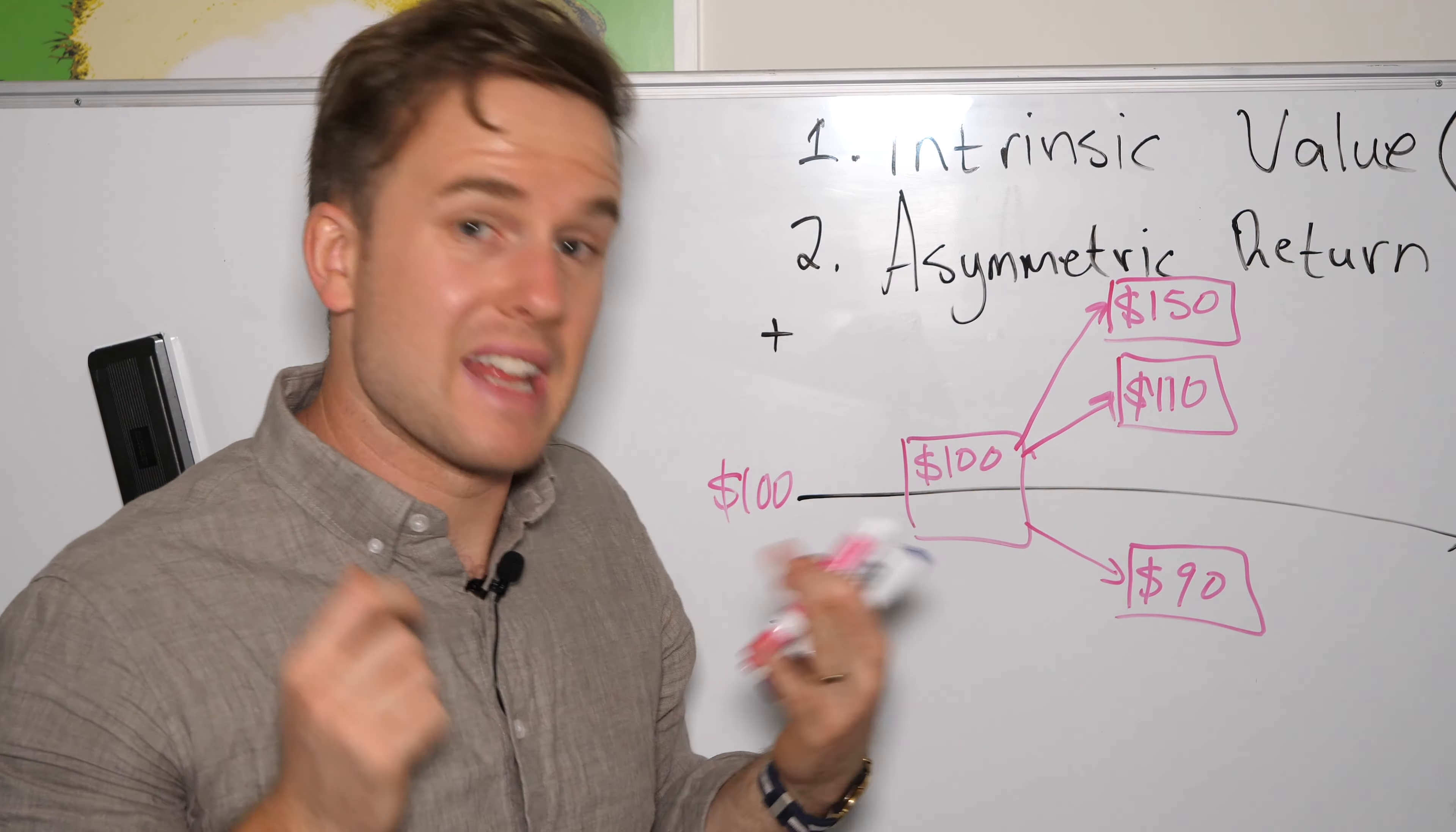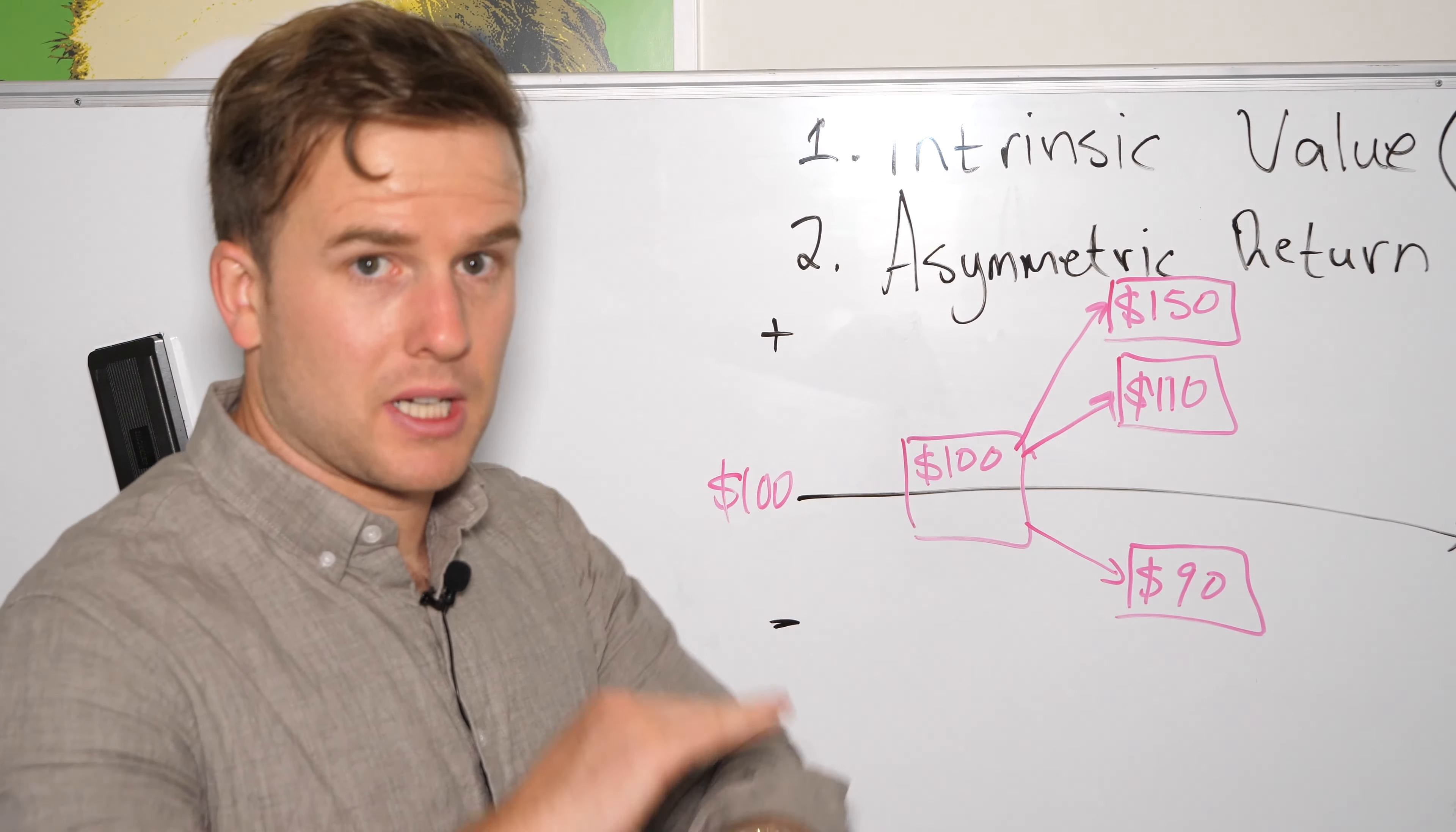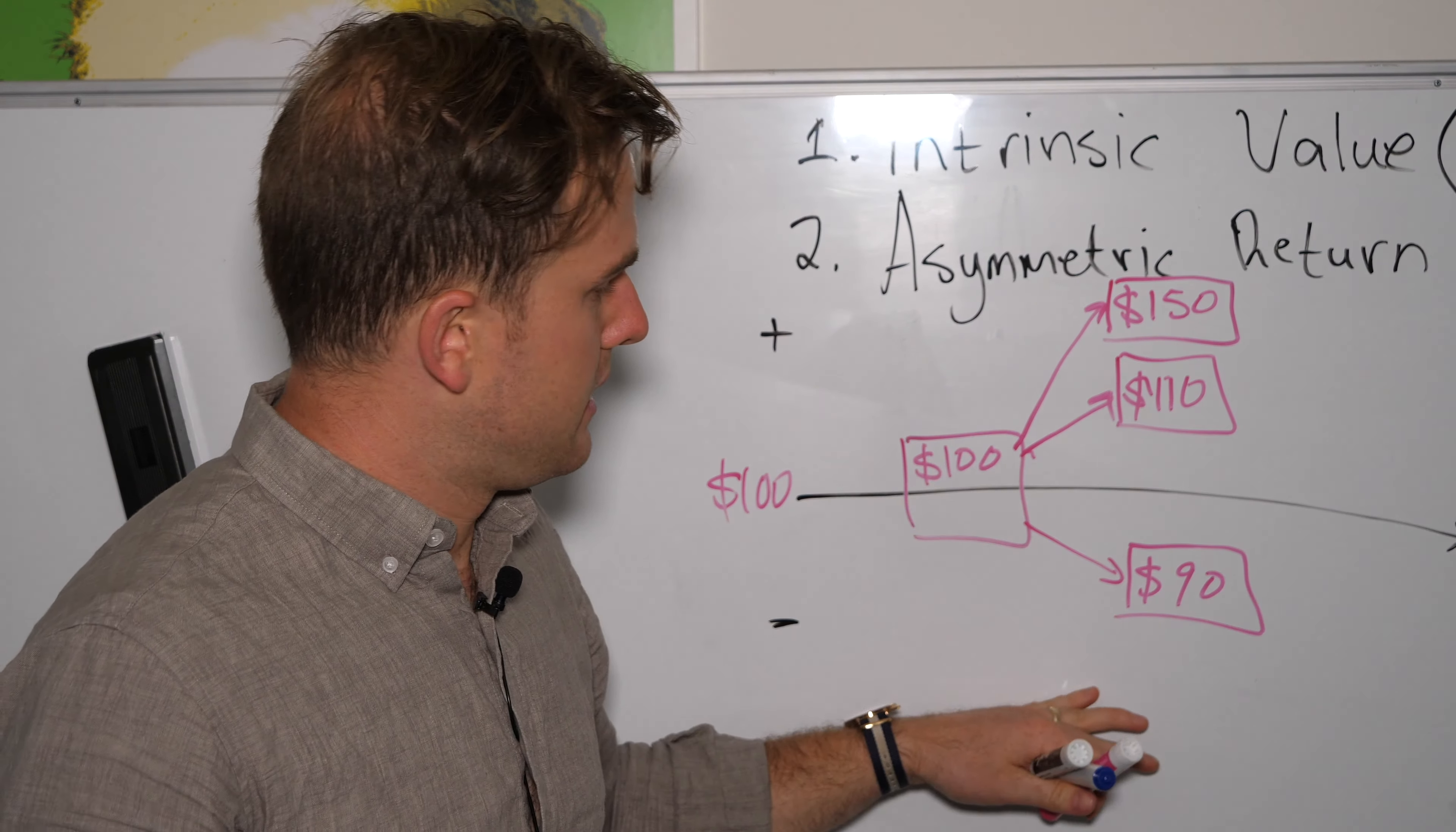And then us as investors and as analysts, we have to use our intuition or our beliefs and our instincts to decide whether one particular outcome is more likely than another. But I'm going to keep things simple here. And we have three outcomes, all equally likely. So 33.33% chance that any one of these comes to reality.